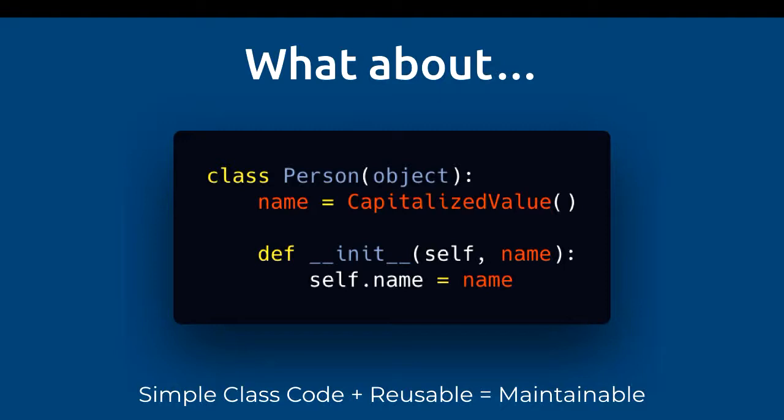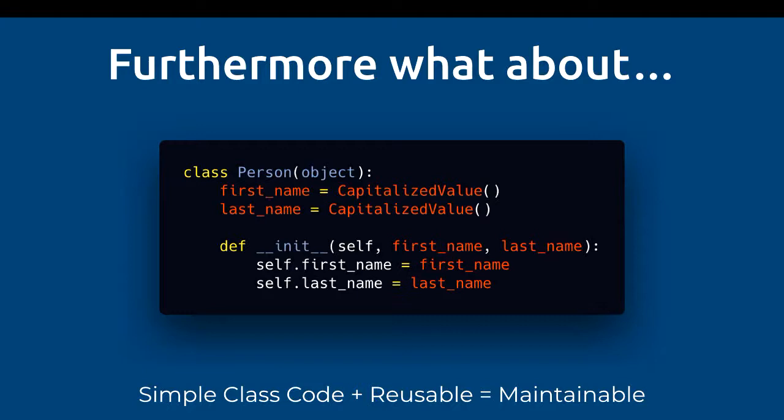So what if we could just declare that name is always a capitalized value? What if we could declare that we have two capitalized values without having to make the source code quite long? This is all possible using the descriptor protocol in Python, and it ultimately leads to simpler class code. And because descriptors are implemented as classes, they're reusable, which wraps up all your logic and leads to greater maintainability.